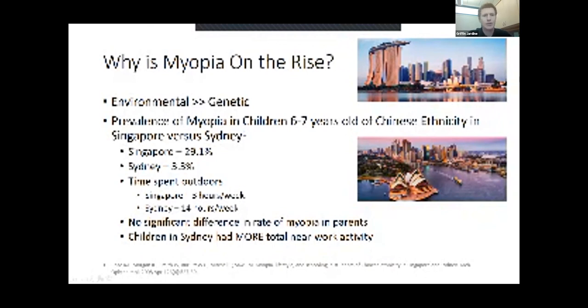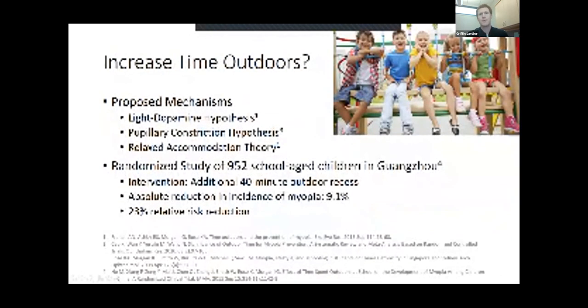There was no significant difference in the parents' myopia, speaking to the genetic cause. And ironically, children in Sydney reported having actually more total near work activity. So the amount of time we're spending on screens is thought to be a risk factor. But in this study, it was really much more so the time spent outdoors.